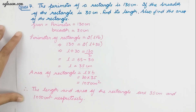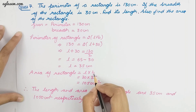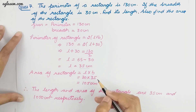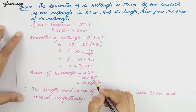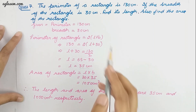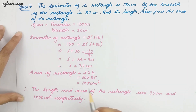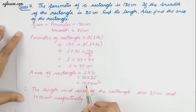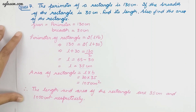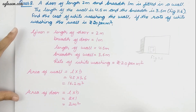The area of rectangle is length into breadth. Length is 35 centimeter and breadth is 30 centimeter, giving area of 1050 centimeter square. Therefore, the length and area of the rectangle are 35 centimeter and 1050 centimeter square respectively.